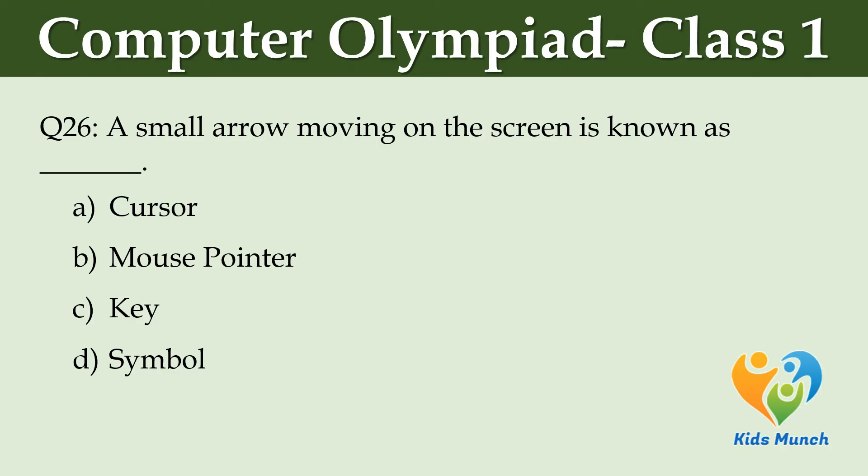A small arrow moving on the screen is known as dash. Option A: Cursor. Option B: Mouse pointer. Option C: Key. Option D: Symbol.